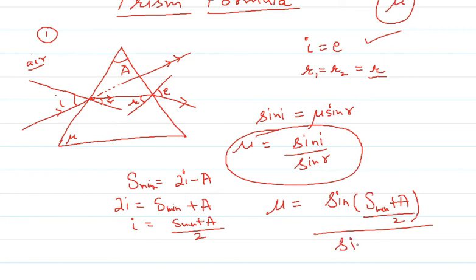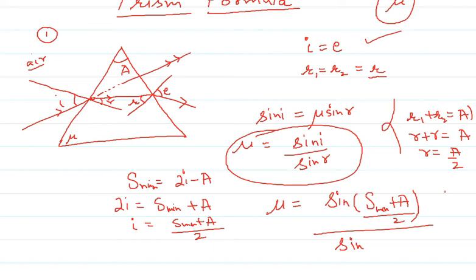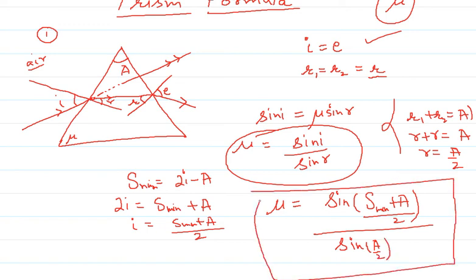For sin R: we know that R1 plus R2 equals the angle of prism A. But when we have minimum deviation, R1 and R2 are both equal to R, so R plus R equals A, giving R equals A divided by 2. Therefore, in place of sin R we write sin(A/2), giving us the complete prism formula.